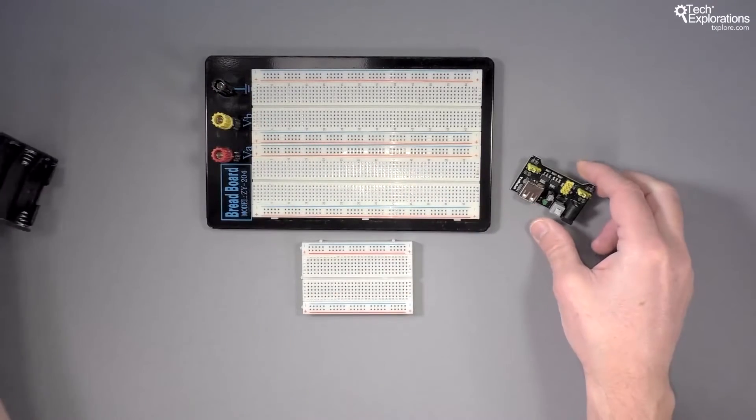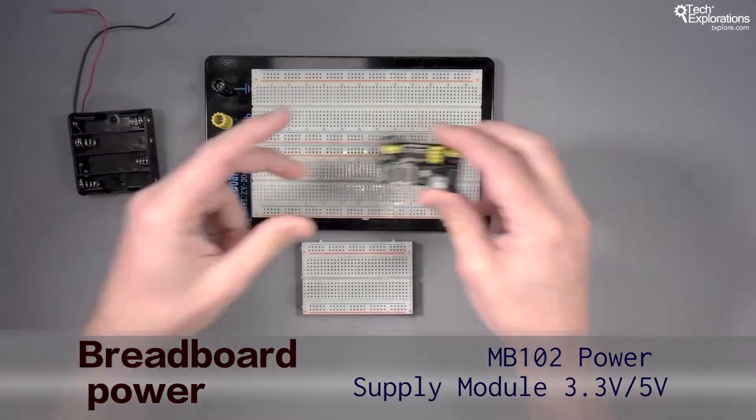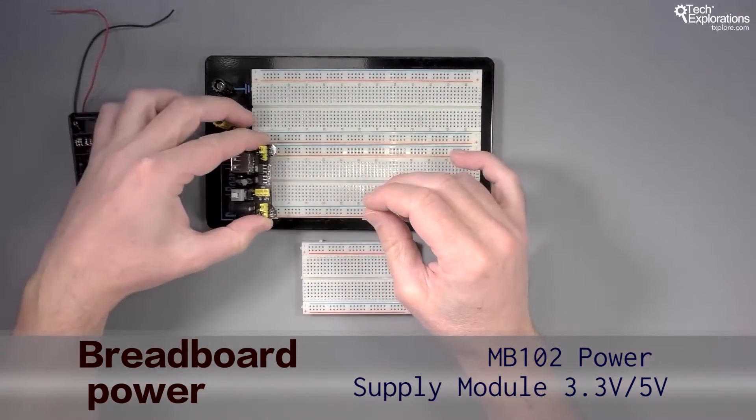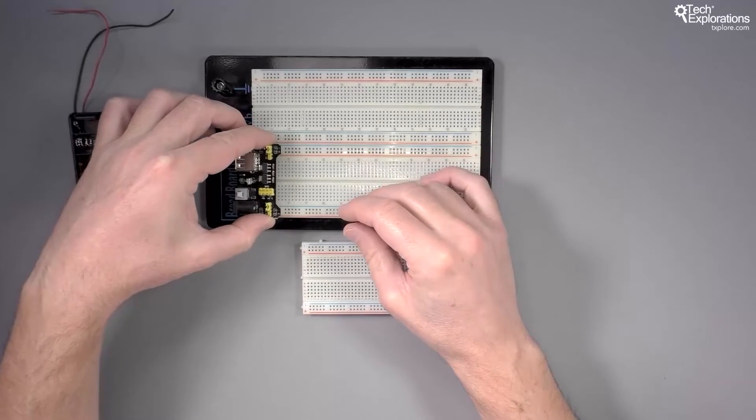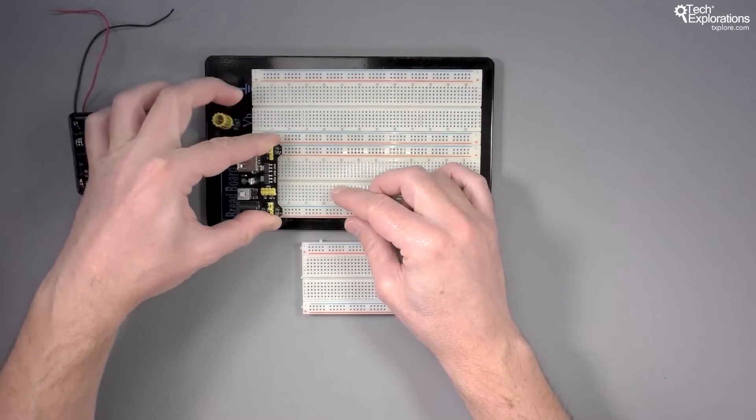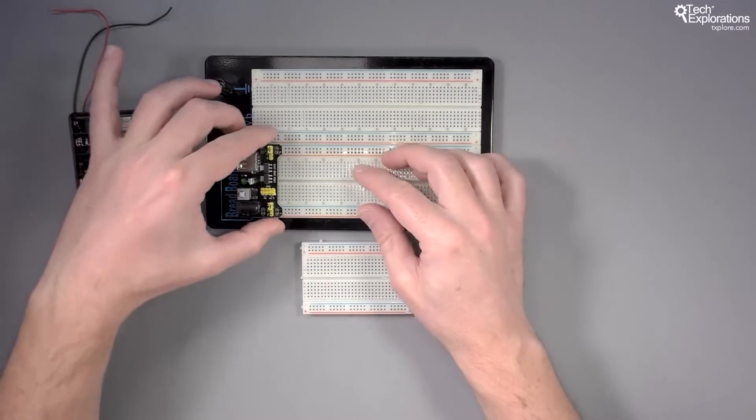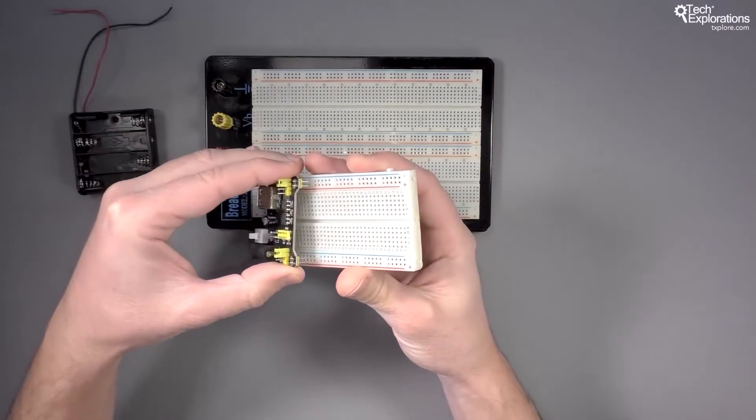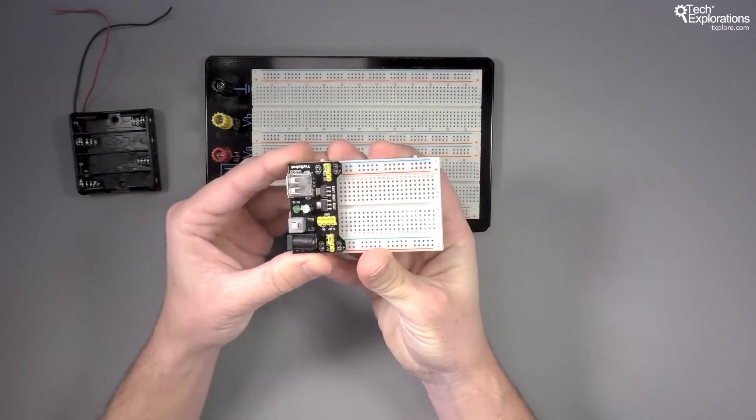Or you can go with a power supply like this one which plugs onto the power rails of your breadboard. Either in my larger breadboard this is going to fit perfectly fine, or in my mini breadboard, again no problem. You can power your circuits like this.